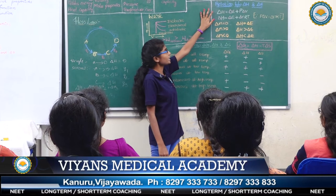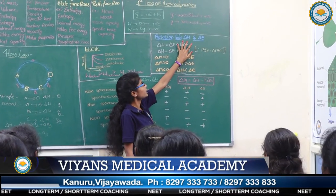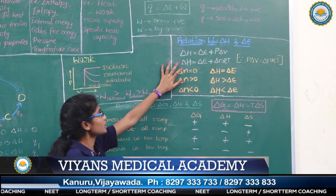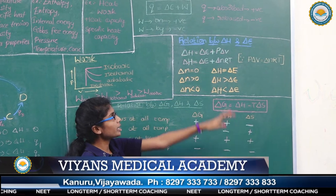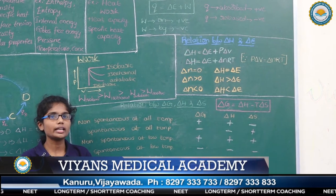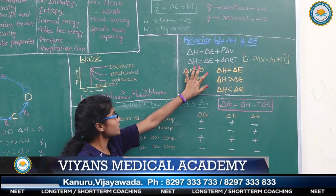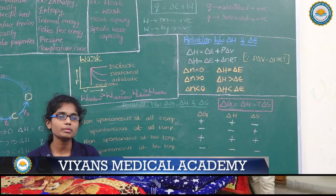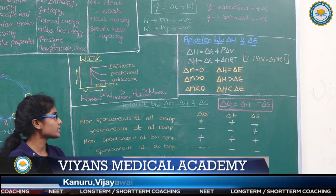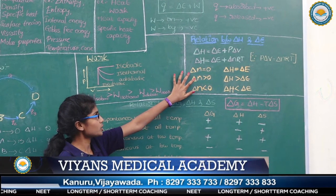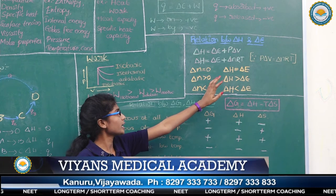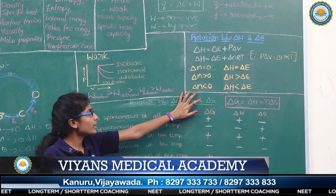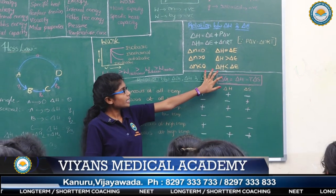Relation between delta H and delta E: delta H means change in enthalpy and delta E means change in internal energy. The equation is: delta H = delta E + P·delta V. Since P·delta V = delta N·RT, we can write delta H = delta E + delta N·RT. Delta N means number of moles of gaseous products minus number of moles of gaseous reactants. So if delta N = 0, then delta H = delta E. If delta N > 0, then delta H > delta E. If delta N < 0, then delta H < delta E.